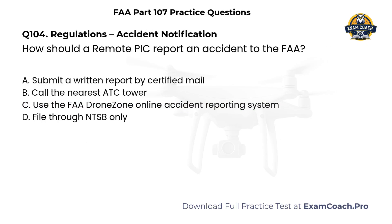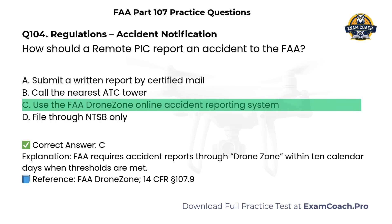Regulations. Accident notification. How should a remote PIC report an accident to the FAA? A. Submit a written report by certified mail. B. Call the nearest ATC tower. C. Use the FAA DroneZone online accident reporting system. D. File through NTSB only. Correct answer: C. FAA requires accident reports through DroneZone within 10 calendar days when thresholds are met.